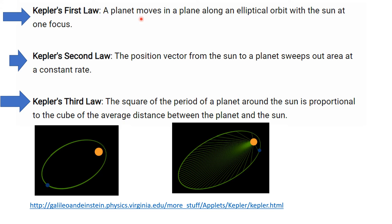Previously we had proved Kepler's first law that a planet moves in a plane along an elliptical orbit with the Sun at one focus. We also proved Kepler's second law that the position vector from the Sun to a planet sweeps out area at a constant rate. That means equal areas in equal times. And Kepler's third law, the square of the period of a planet around the Sun is proportional to the cube of the average distance between the planet and the Sun.